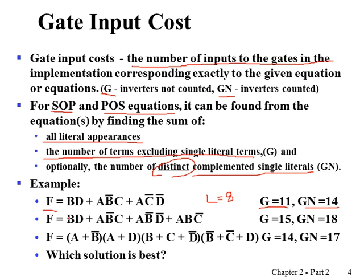For the second function, literal cost is 11. Adding the number of product terms — we have 4 — gives gate input cost of 15. For gate input cost with NOTs, we add the number of distinct complemented literals: not B, not D, and not C. We have two not B's, but we count only once since we count distinct ones only. So we add 3, giving gate input cost with NOTs as 18.